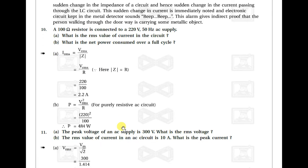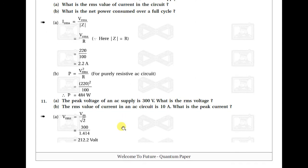Example ten: a 100 ohm resistance connected to 220 volt, 50 Hz supply. The RMS current: Irms = Vrms / Z, and since Z = R, Irms = 220 / 100 = 2.2 ampere. The net power consumed over a full cycle: P = V²rms / R = 484 watt.